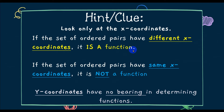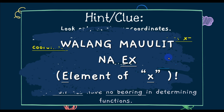A helpful hint: look only at the x-coordinate. If the set of ordered pairs have different x-coordinates, it is a function. If the domain values repeat — meaning there are same x-coordinates — then the relation is not a function. Also remember: y-coordinates have no bearing in determining functions. In short, a relation is a function when no x value repeats.